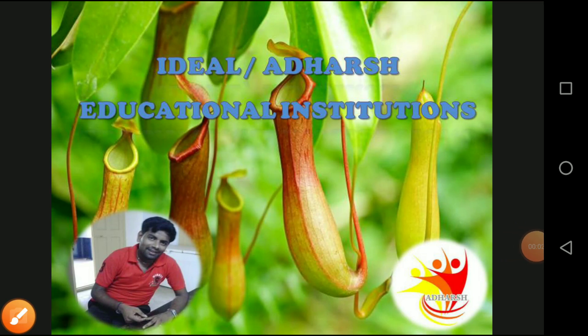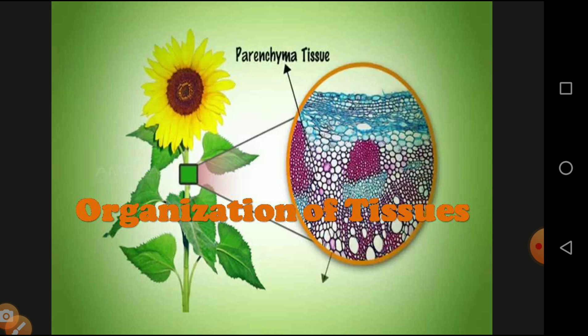Hi and hello, welcome to online biology class from Ideal Others Educational Institution. I am Sadish Kumar, going to take the class regarding the topic of Organization of Tissues. This is Unit Number 18 for ninth standard biological science. Today's topic is organization of tissues, and we will see the variety of tissues available, how tissues are classified, and some basic tissue systems of plants.